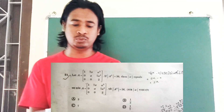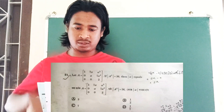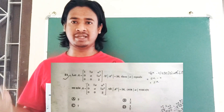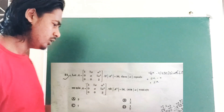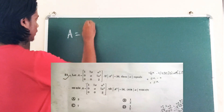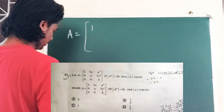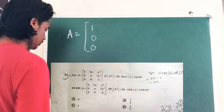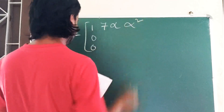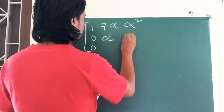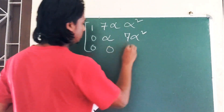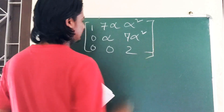Let me write the matrix clearly. It is an upper triangular matrix with entries: row 1 = (1, 7α, α²), row 2 = (0, α, 7α²), row 3 = (0, 0, 2).